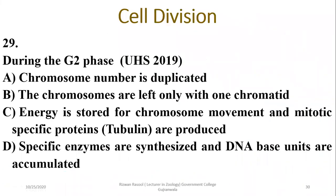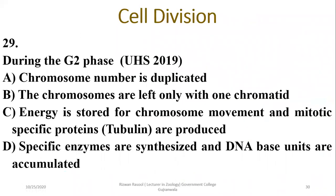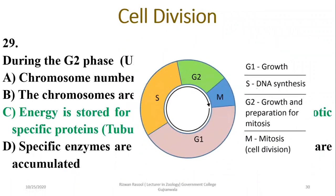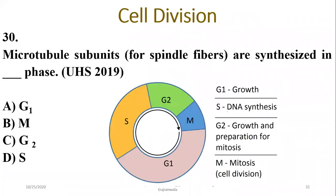Question 29: During the G2 phase — the pre-mitotic phase — energy is stored for chromosomal movement and mitotic-specific proteins are produced. G1 is the growth phase involving duplication of most cell components; S phase is the DNA synthesis phase (the longest phase); G2 involves growth and preparation for mitosis; and M phase involves mitosis itself.